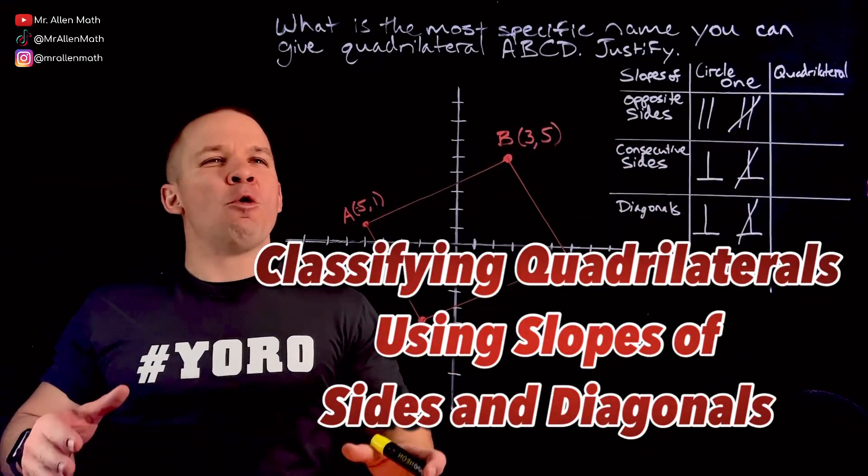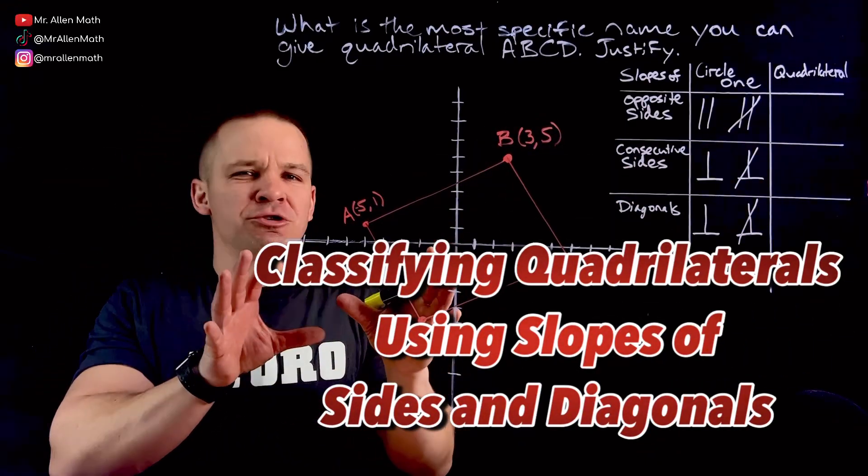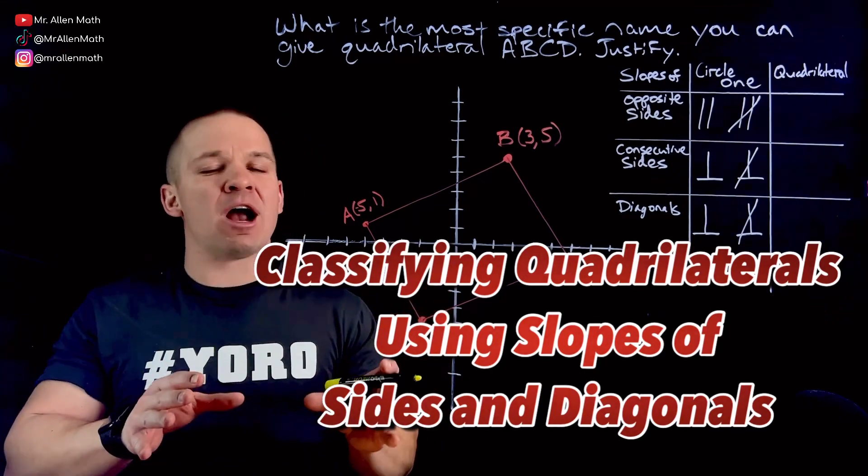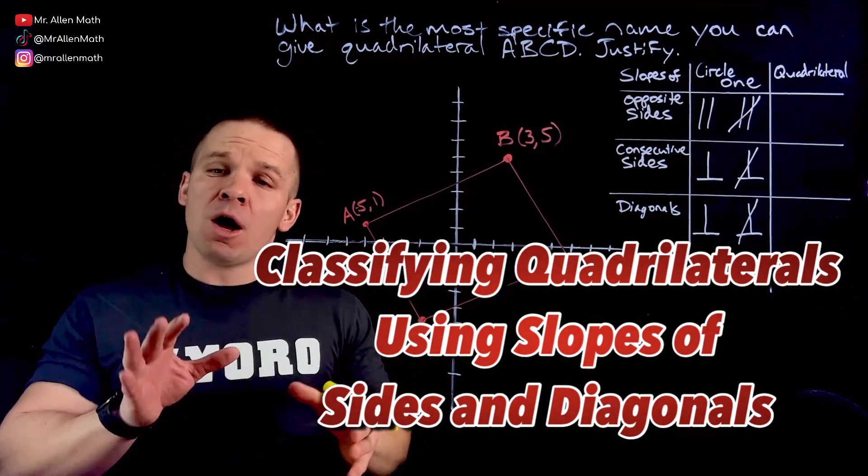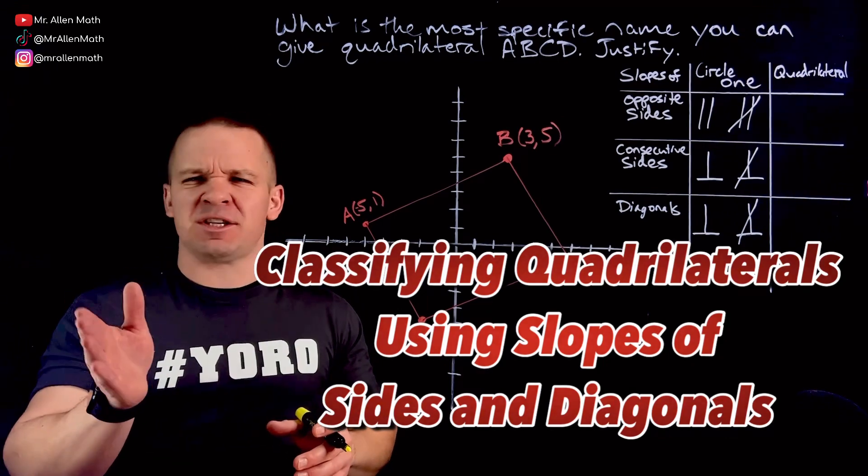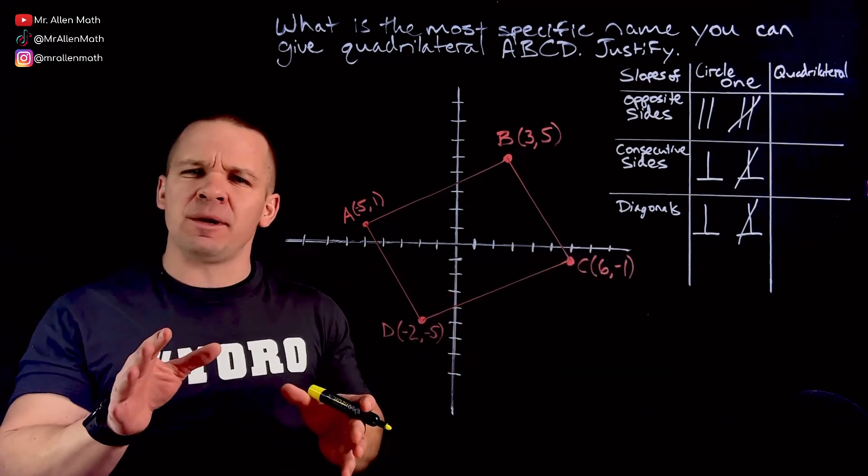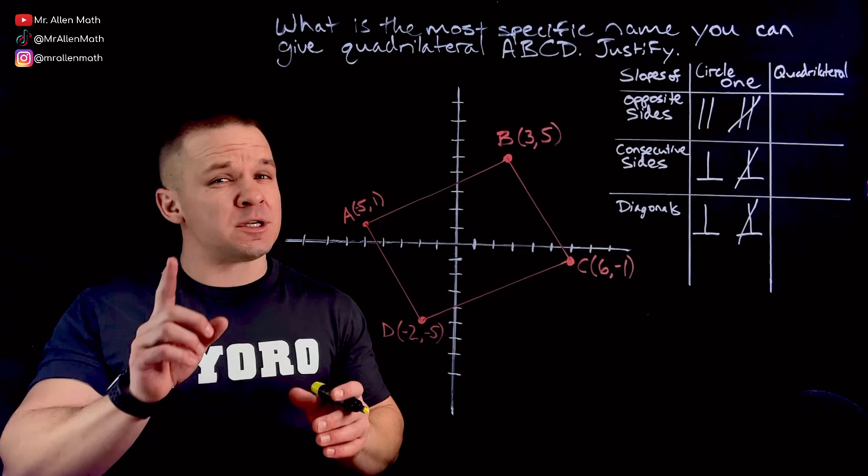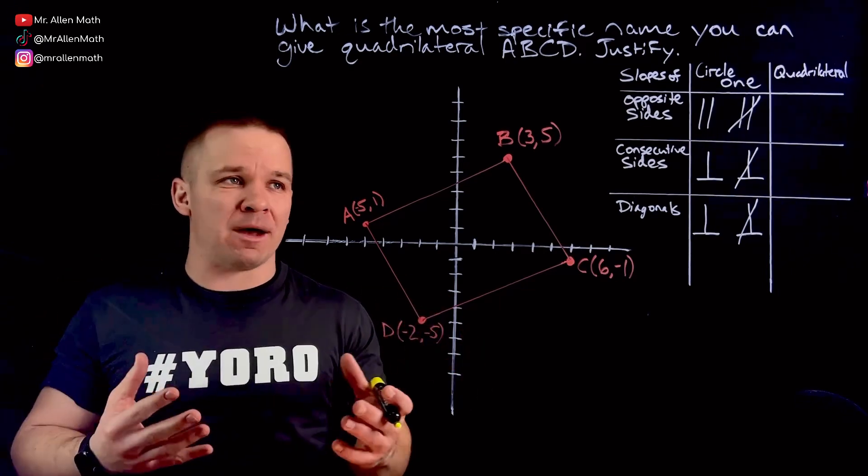What's poppin' dogs? Mr. Allen here. We're about to classify this quadrilateral ABCD here on our XY coordinate plane. And we're going to do so using the slopes of our sides rather than using our distance formula to find the lengths.